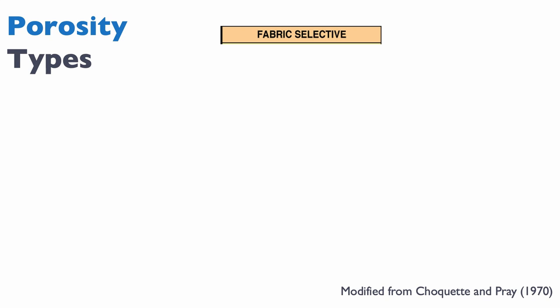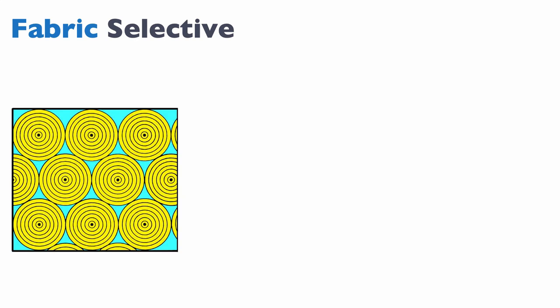Whether the porosity is fabric selective or not plays a big role. So we have fabric selective and not fabric selective. What is a fabric selective porosity? I'll give you three examples. In this case, we have rounded ooids, and in blue, in between the grains, we have a porosity. This porosity is said to be fabric selective because it follows the fabric of the rock. The fabric of the rock in this case is the shape of the ooids.